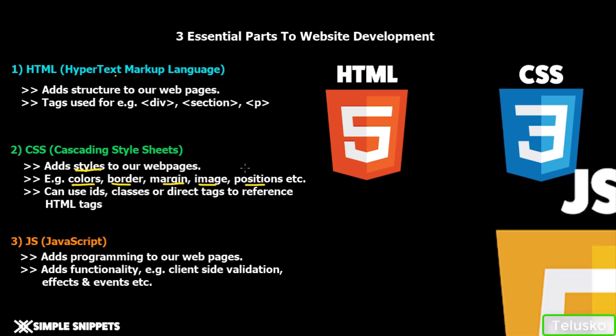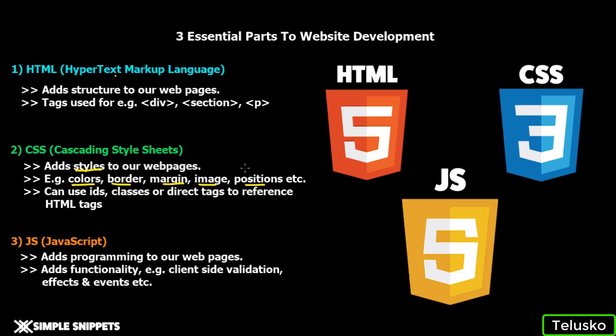The third part is JavaScript, which adds programming to our web pages. Using HTML and CSS you can develop a complete website, but to add certain functionality — for example, if you have a button and clicking it should do something — that function can be added using JavaScript. Or if you have a form and you want to validate that a number cannot be entered in a name field, those client-side functionalities can be performed using JavaScript. Combining these three, you get a complete client-side website with structure from HTML, styles from CSS, and client-side functionalities like validations, effects, and events from JavaScript.